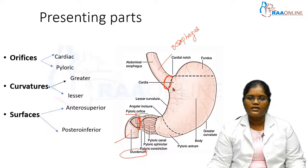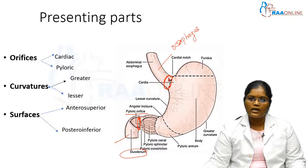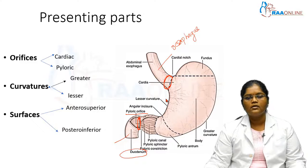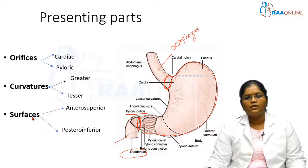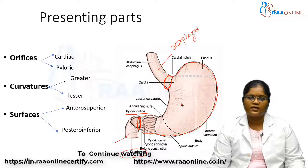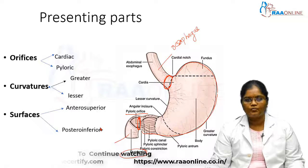Now let's see the curvatures and surfaces of the stomach. The lesser curvature is concave and lies on the right side. The greater curvature starts from the left border of the esophagus and continues downwards; it is longer than the lesser curvature. There are two surfaces: the anterosuperior surface facing the front, and the posteroinferior surface on the other side.